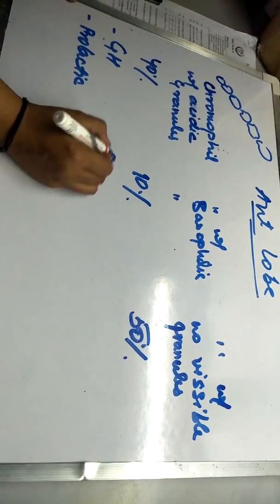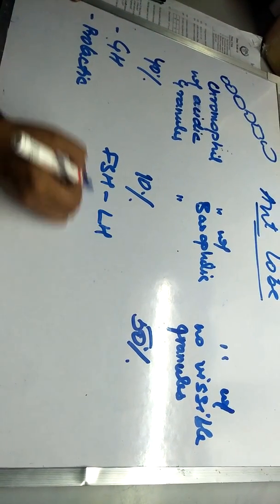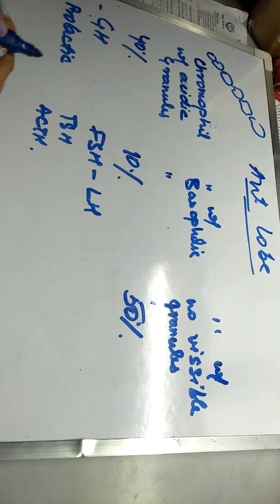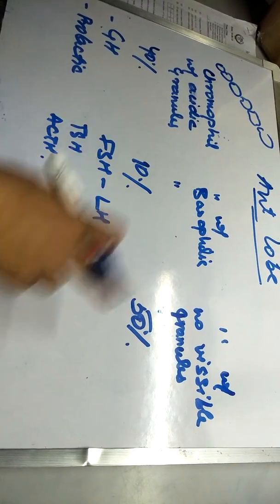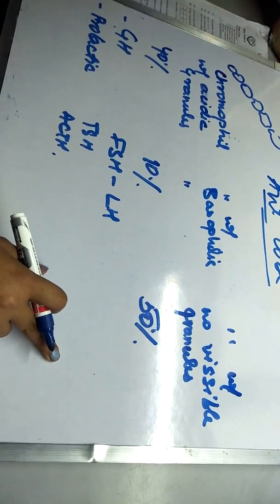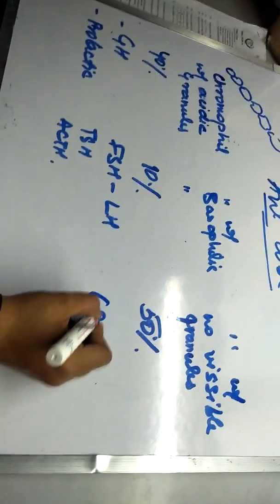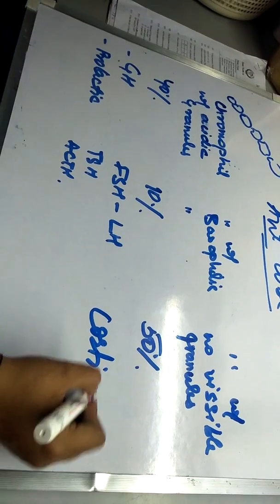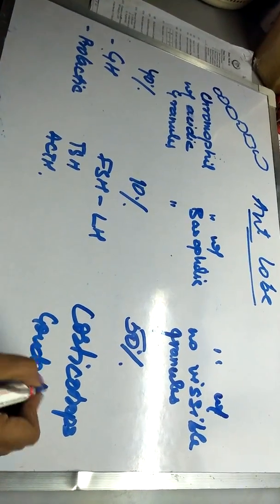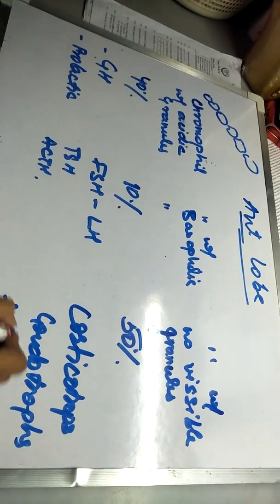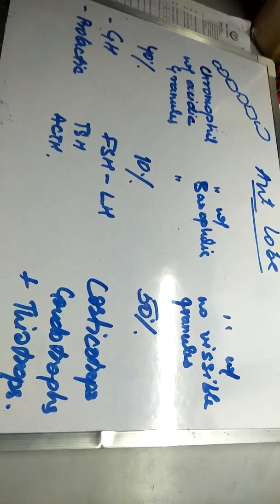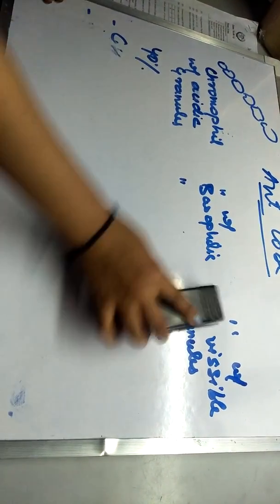The basophilic cells secrete FSH and ACTH. The chromophobe cells (no visible granules) contain corticotrophs, gonadotrophs, and thyrotrophs. Now we need to look at the posterior lobe of the pituitary.